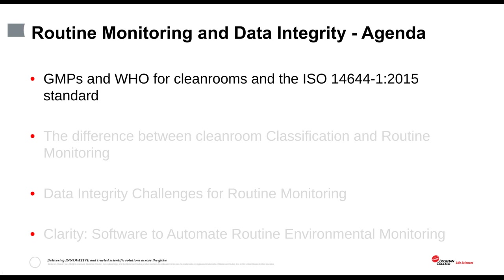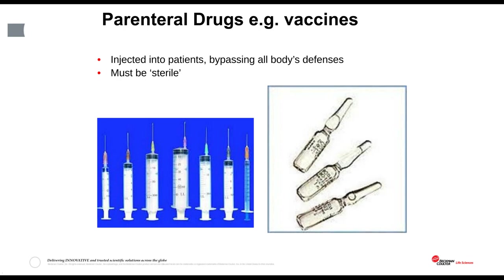Let's take a look at the GMPs and the World Health Organization guidance for clean rooms, and also look at ISO Standard 14644-1, 2015. We are all painfully aware of the current global COVID pandemic, and injectable drugs like vaccines are the biggest risk for contamination for humans because they are injected directly into the human body. They bypass our defenses, and any microbial contamination they contain could cause an infection, possibly blood poisoning and possibly death.